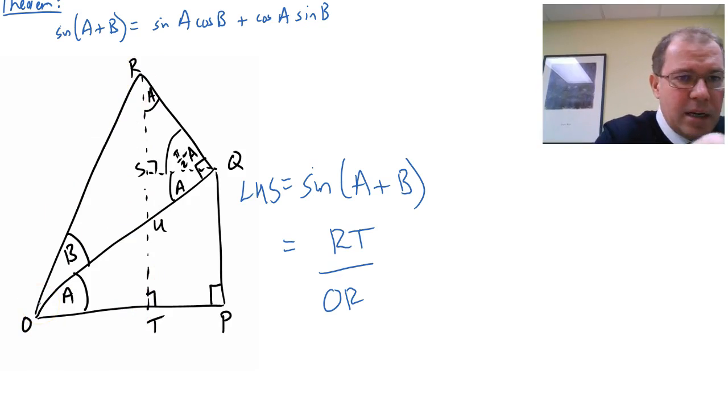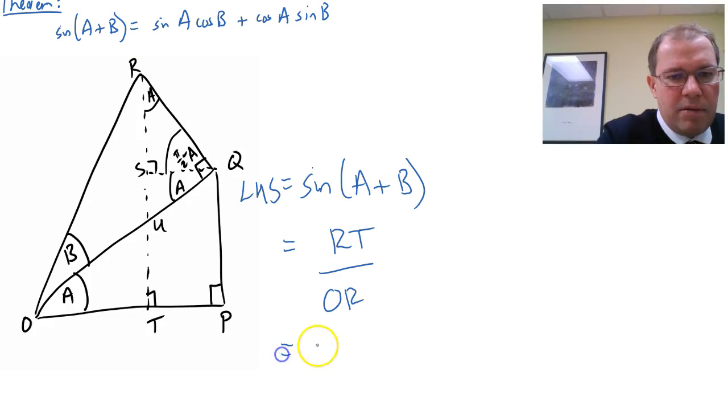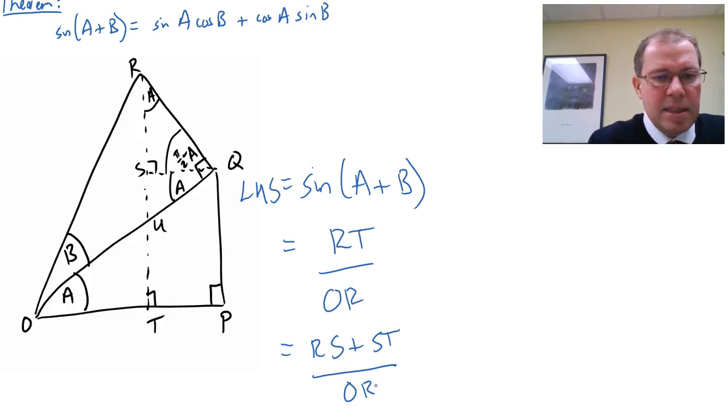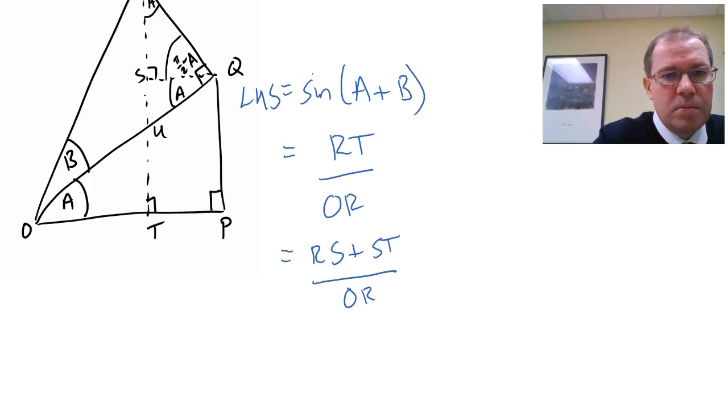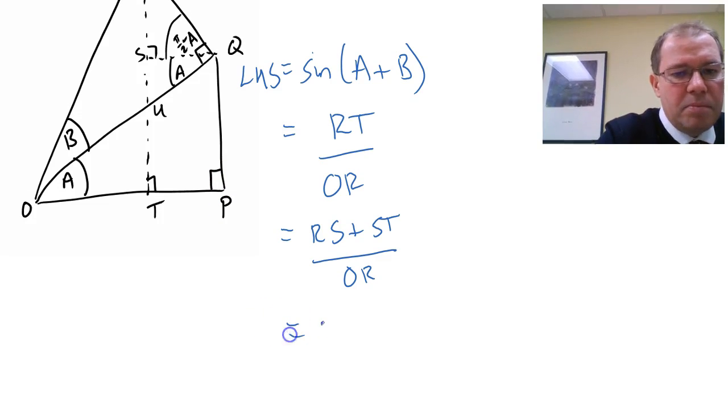So then what I can do is I can look at the length RT and write that as RS plus ST. So I can write that as RS plus ST over OR. And then I can see that the length ST is the same as the length PQ. So I can swap ST for PQ. So here I will swap ST for PQ, and I'll write them both over OR.